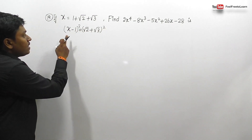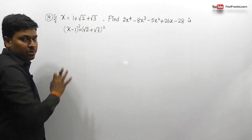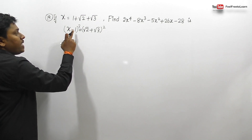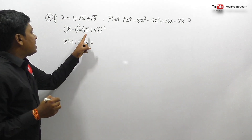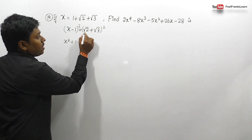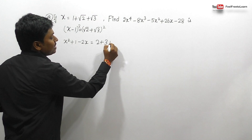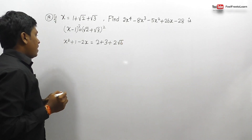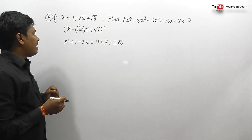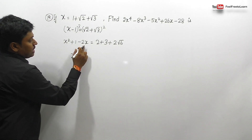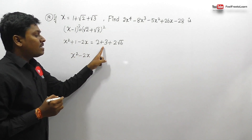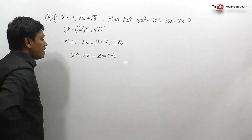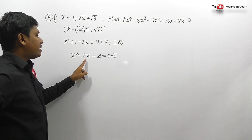Now taking square on both sides. The left side looks like (a-b)² format: a square minus 2ab, so x² minus 2x. The right side looks like (a+b)²: root 2 squared is 2, root 3 squared is 3, plus 2 into root 2 into root 3, which is 2 root 6. So 2 plus 3 equals 5. Bringing plus 5 to the left: x² minus 2x minus 4 equals 2 root 6.